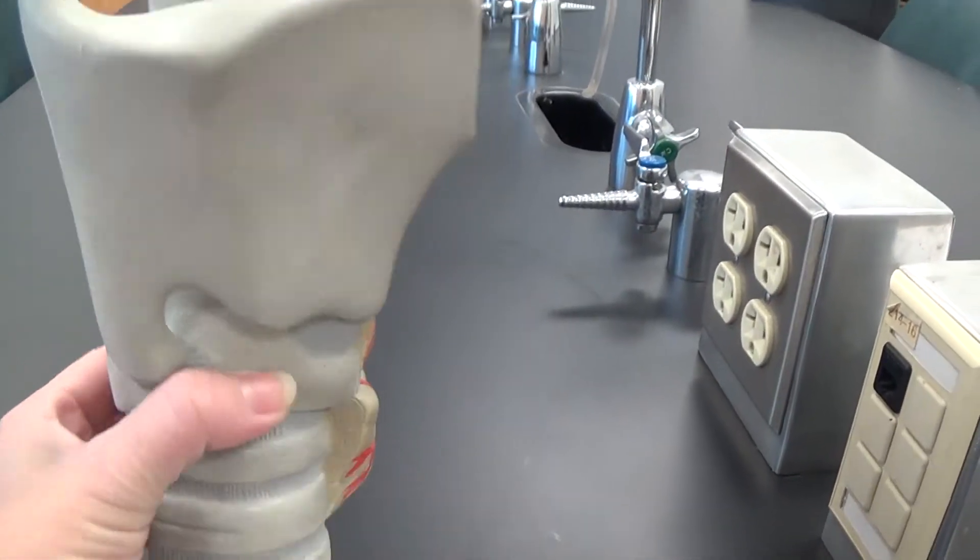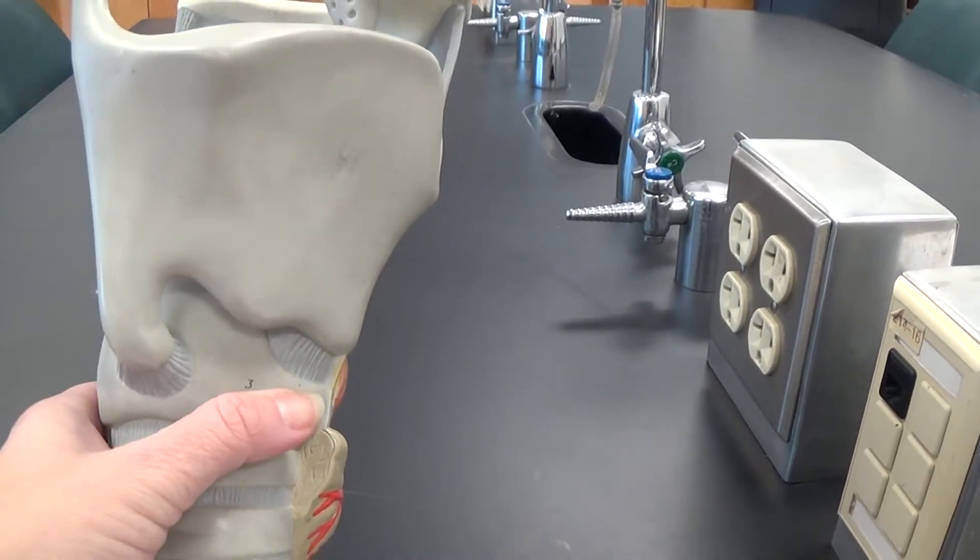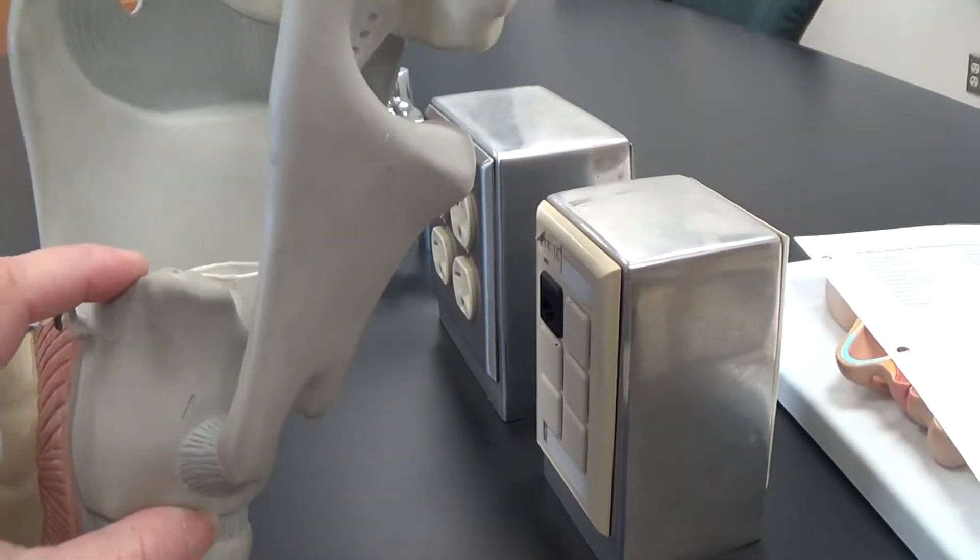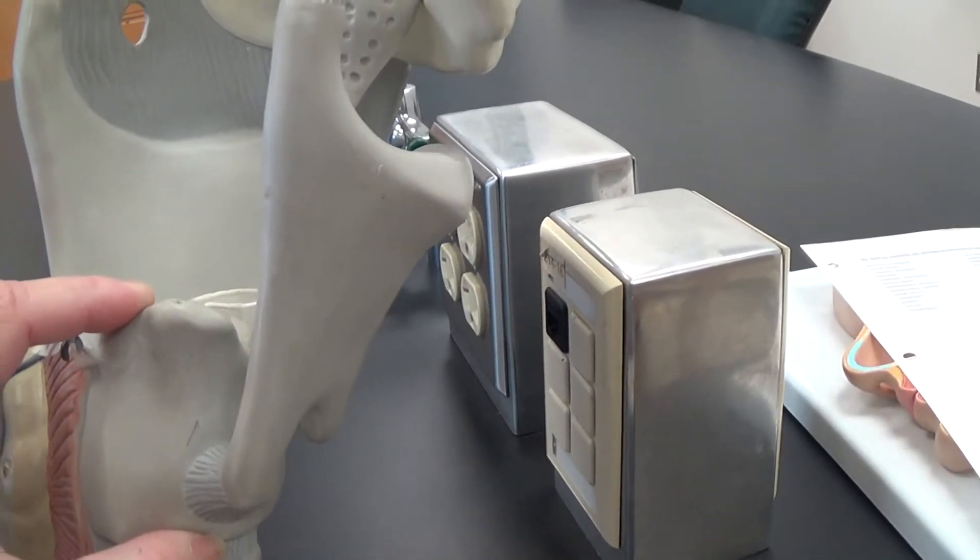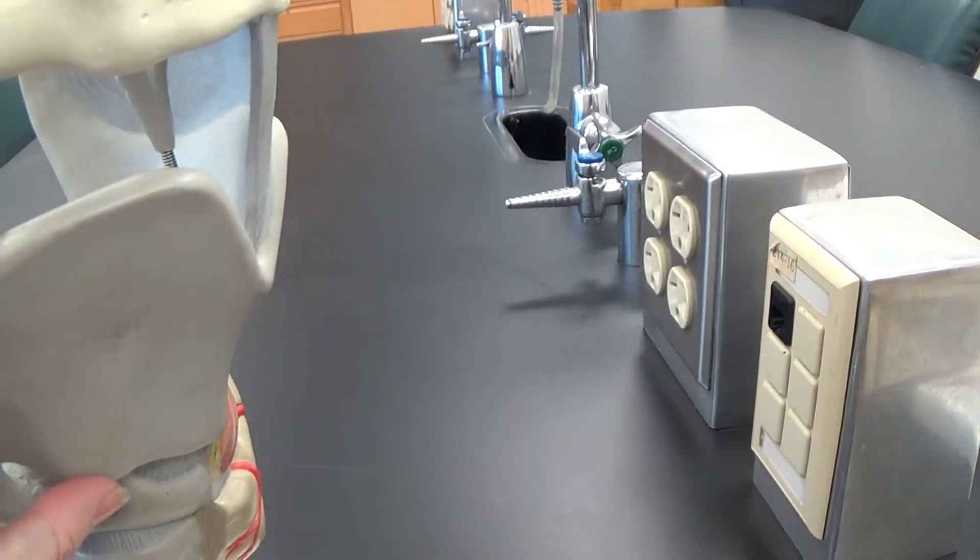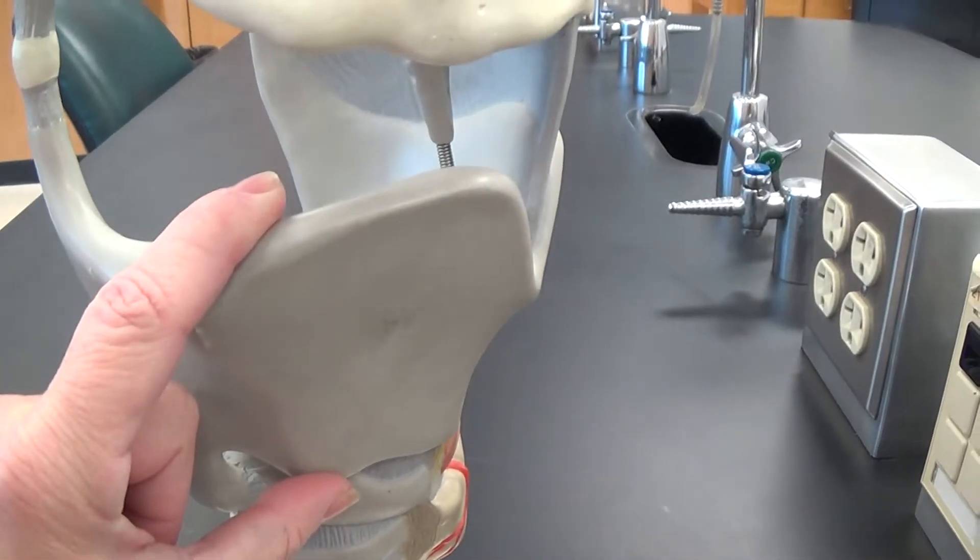This one ring right here, which is smaller in the anterior portion and gets much larger in the posterior portion, is the cricoid cartilage. And this large plate of cartilage here is the thyroid cartilage.